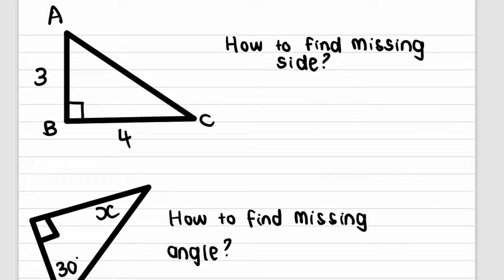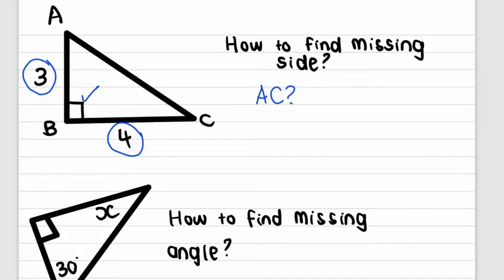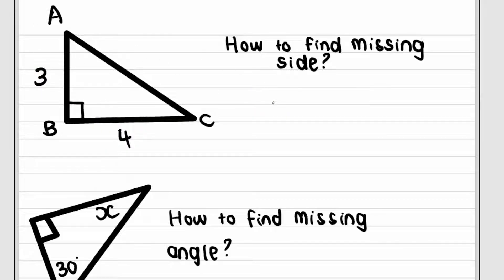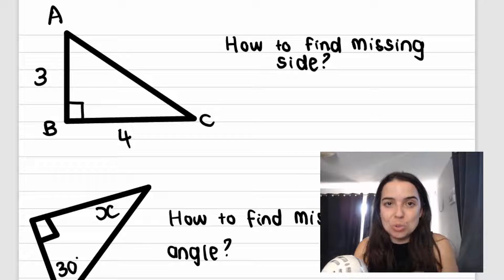Let's look at the first triangle, triangle ABC on the top. If I had to give you this triangle and say please find me the length of the missing side for triangle ABC — in other words, find me the length of AC — how will we do that? Well, it's a right angle triangle and we have the length of the other two sides. So we can use Pythagoras. If we have a right angle triangle and two out of the three sides, we can immediately use Pythagoras.